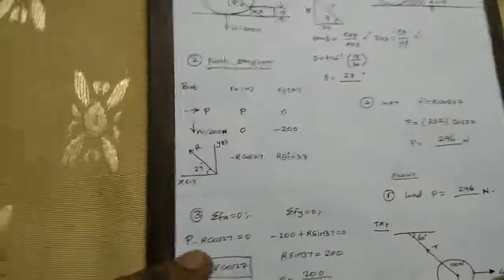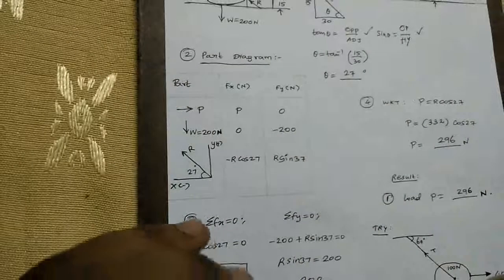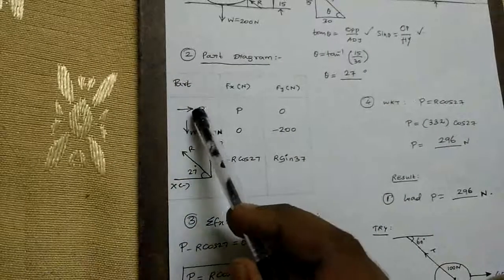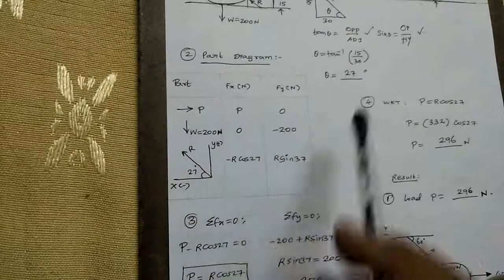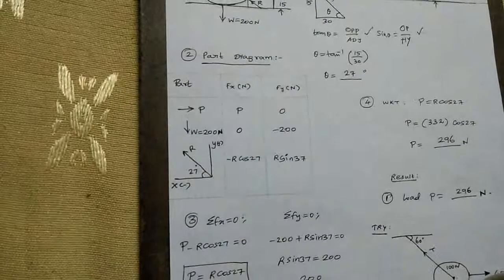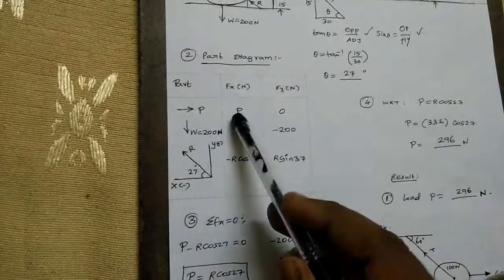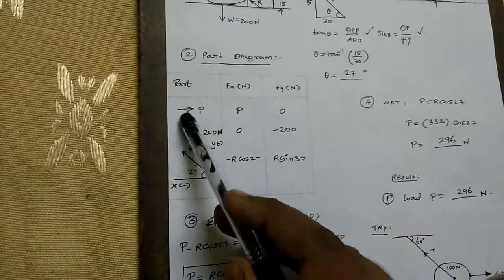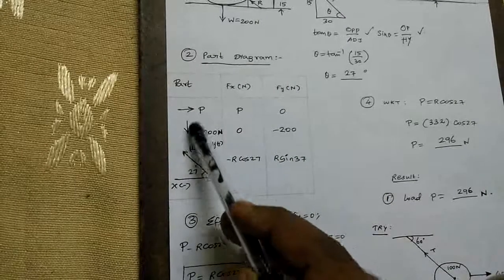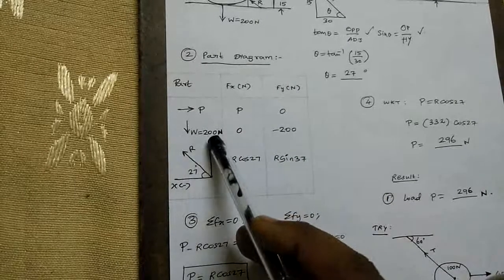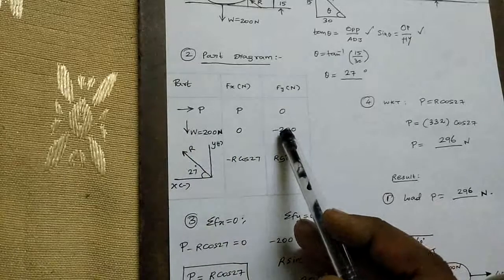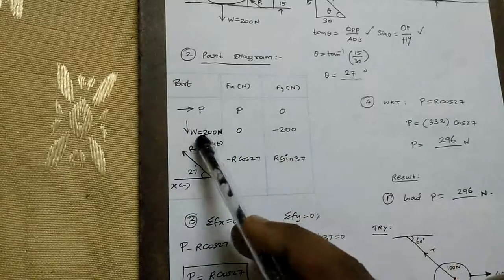So the force components of P: the X component of P is P, the Y component of P is 0. W always acts downward, so X component of W is 0 and Y component of W is 200 newtons downward, that is minus 200.